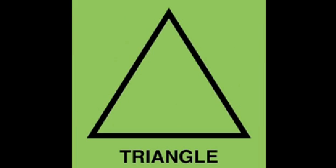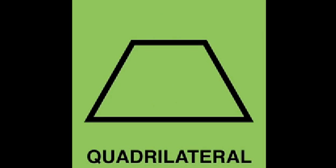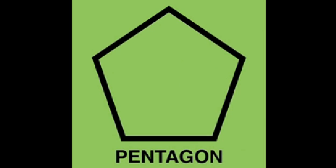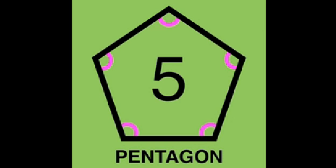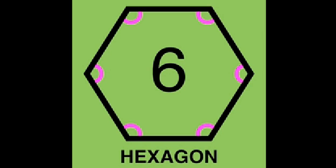A triangle is a polygon with three angles and three sides. A quadrilateral is a polygon with four angles and four sides. A pentagon is a polygon with five angles and five sides.